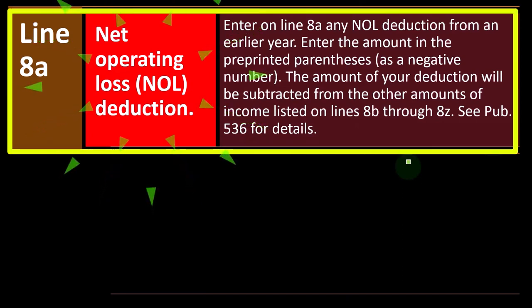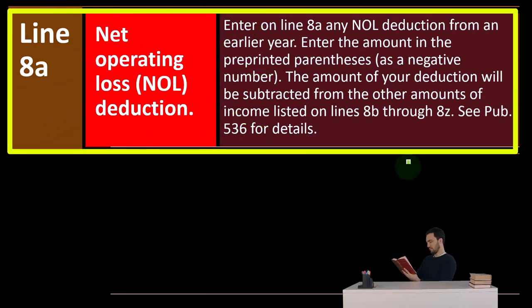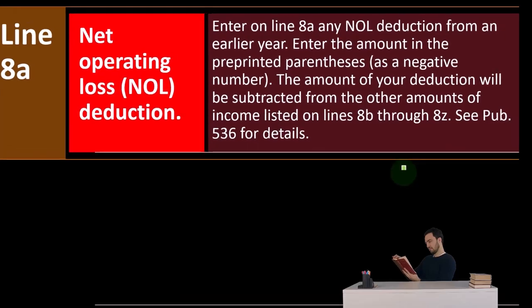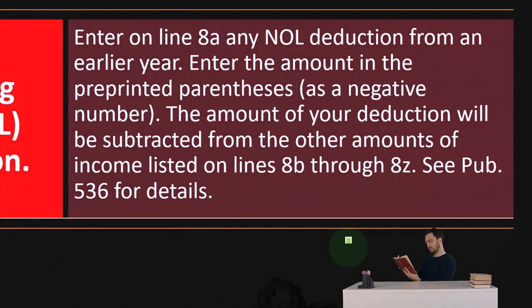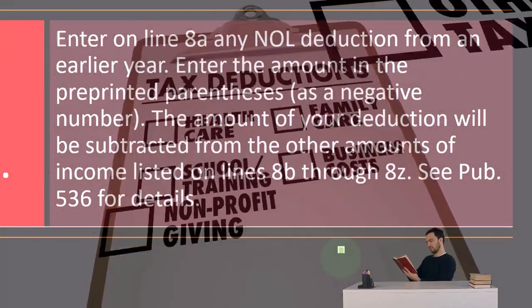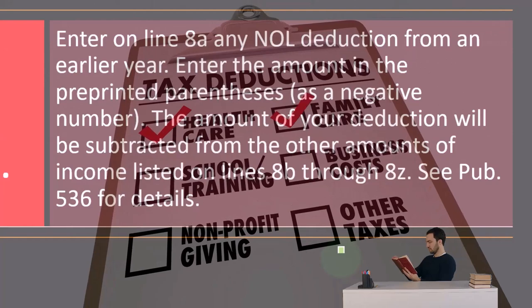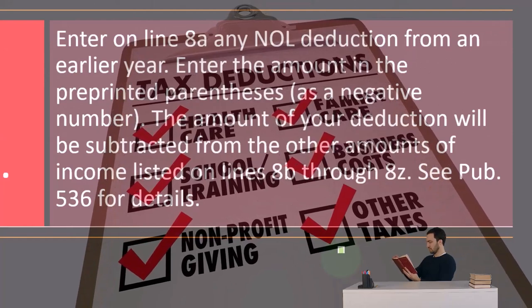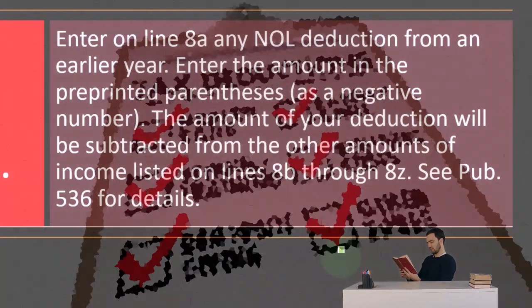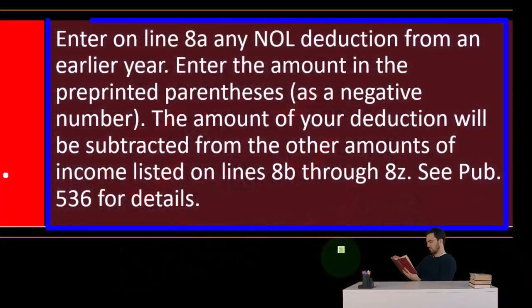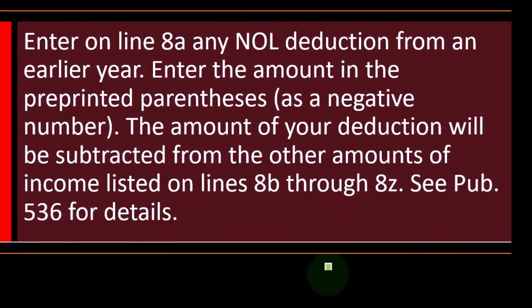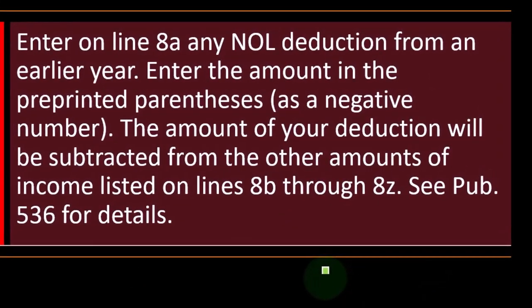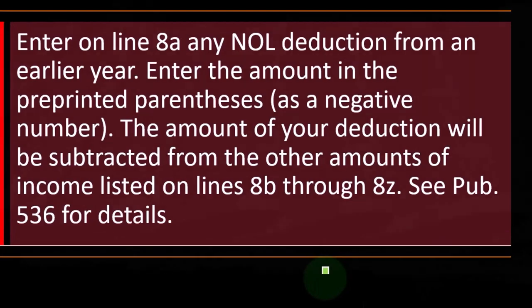Line 8A, net operating loss NOL deduction. Enter on line 8A any NOL deduction from an earlier year. Enter the amount in the pre-printed parentheses as a negative number. The amount of your deduction will be subtracted from the other amounts of income listed on lines 8B through 8Z. You can see Publication 536 for more details.